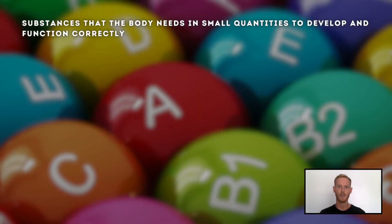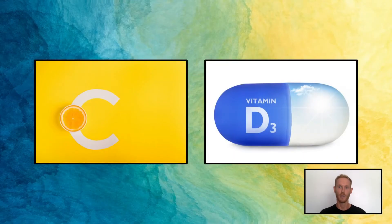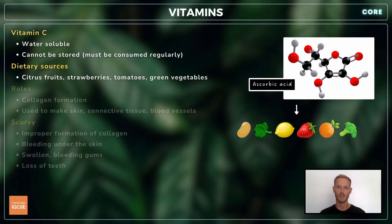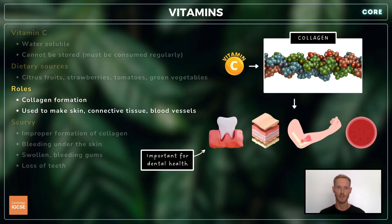Vitamins are substances that the body needs in small quantities to develop and function correctly. Not getting enough of a given vitamin may lead to a vitamin deficiency disease, which can typically be cured by adding the vitamin back into the diet. You need to know about two specific vitamins: C and D. Vitamin C, otherwise known as ascorbic acid, is a water-soluble vitamin found in citrus fruits, tomatoes, potatoes, and green vegetables. It's involved in the formation of collagen, used to make skin, tendons, ligaments, and the walls of blood vessels, and it strengthens the gums and soft tissues in the mouth.